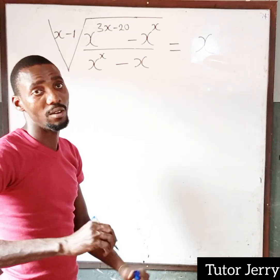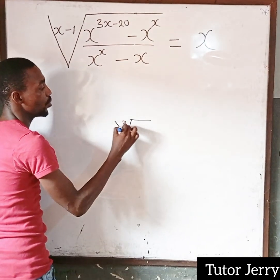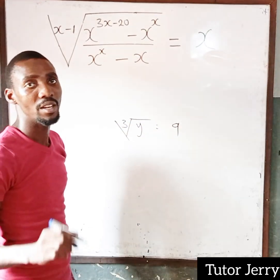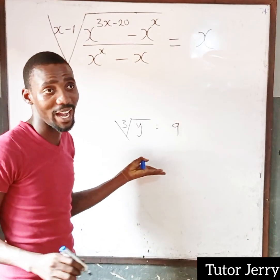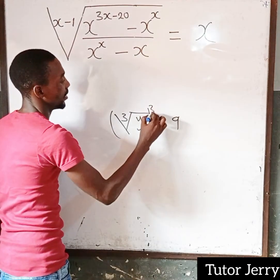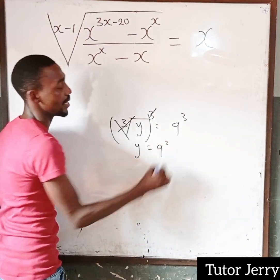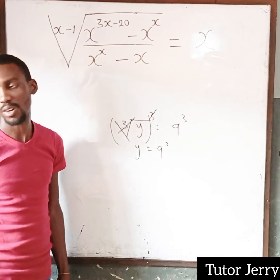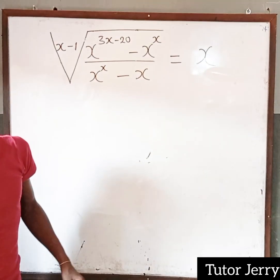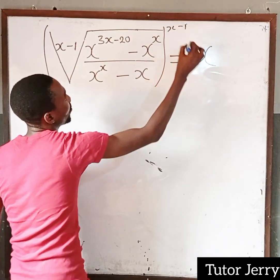The easiest way of doing this — from our normal approach, we have the square root of y. For us to get the value of y, we are going to kill both sides — raise both sides to the same power. We are going to take the power of x minus 1 on both sides.